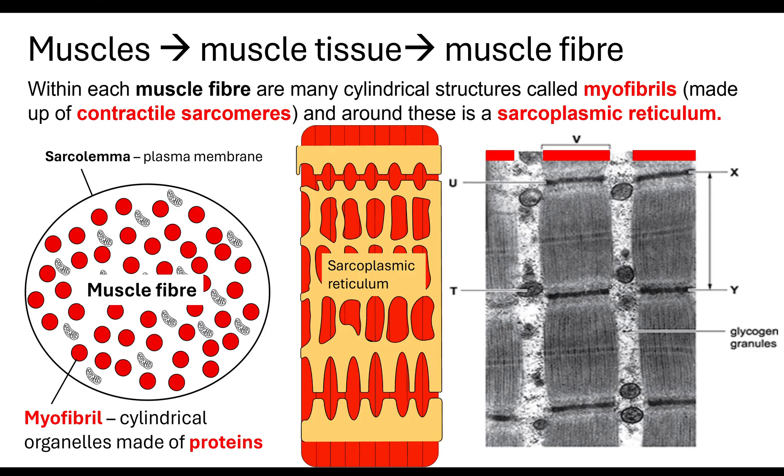When they give you an electron micrograph, they do expect you to note some key distinguishing features. These really long cylindrical organelles run all the way down through the muscle fibre.